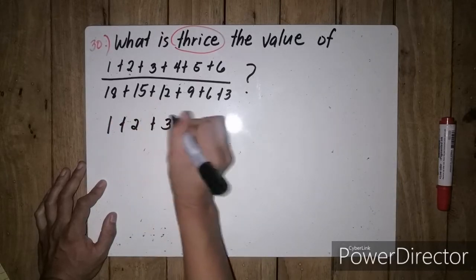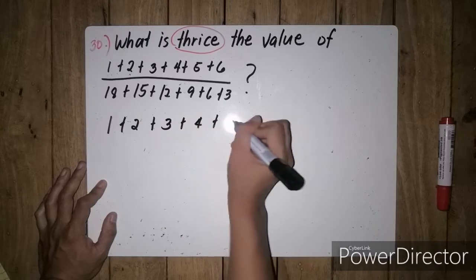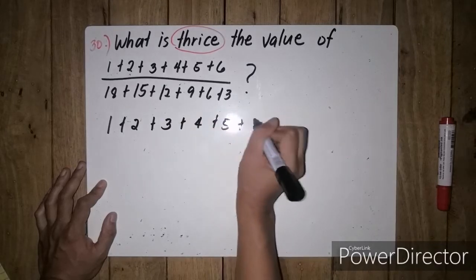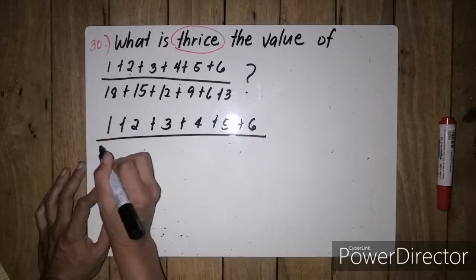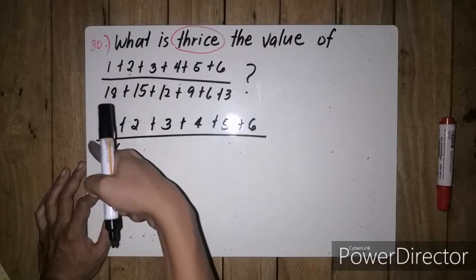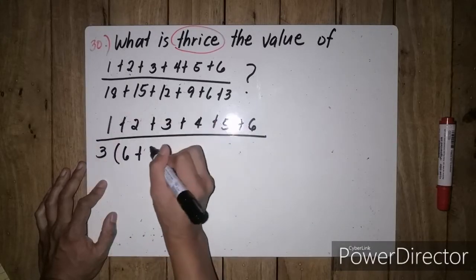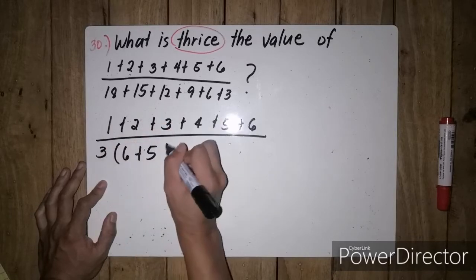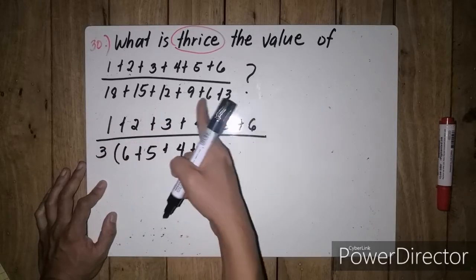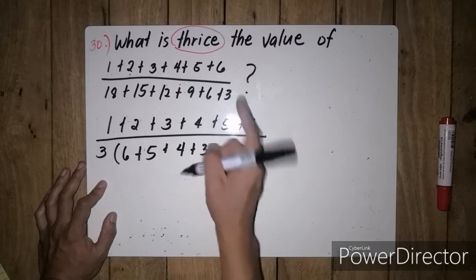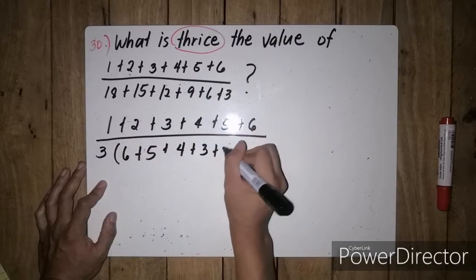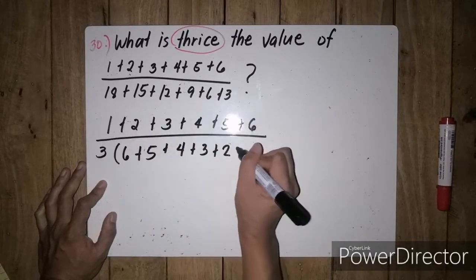1 plus 2 plus 3 plus 4 plus 5 plus 6. Ilalabas natin si 3. 18 divided by 3, we have 6. 15 divided by 3, we have 5. 12 divided by 3 is 4. 9 divided by 3 is 3. 6 divided by 3 is 2, and 3 divided by 3 is 1.